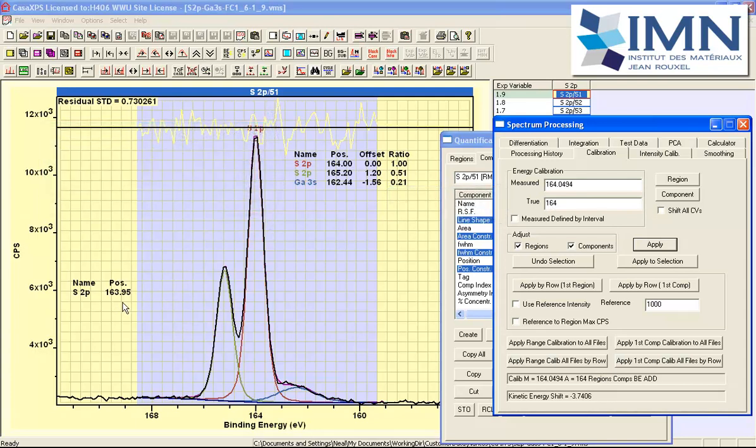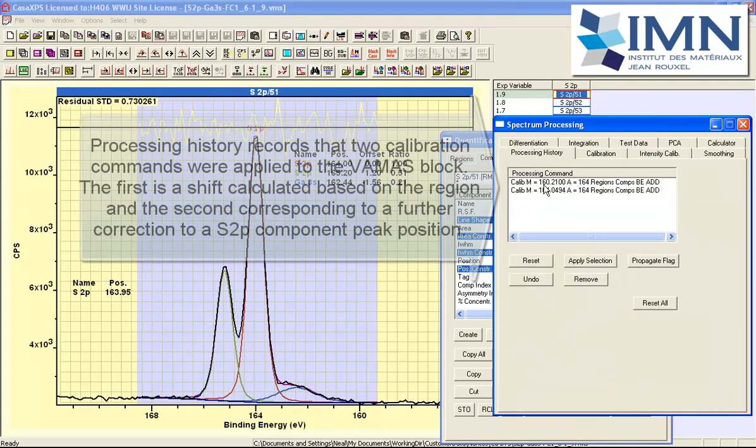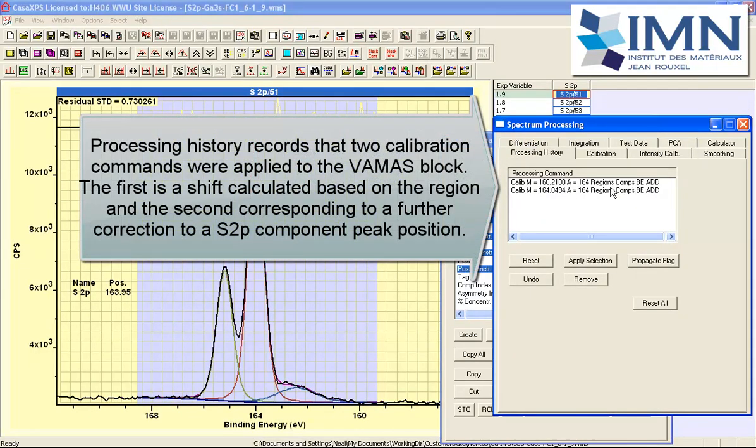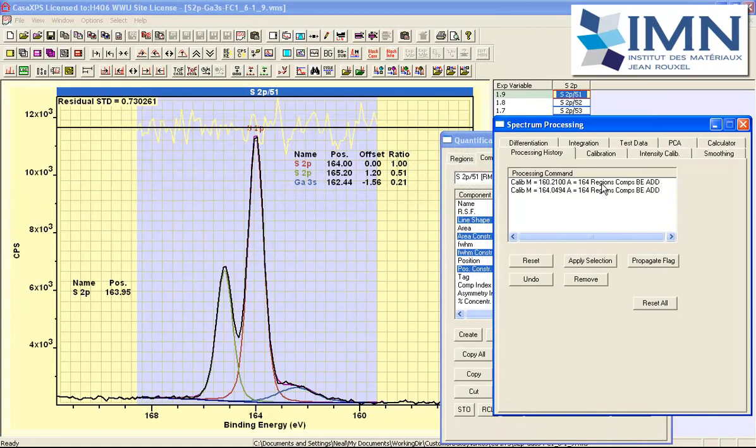So now you can see that the peak position for the three halves peak is now agreeing with the true value and as a consequence the region position has now moved by a corresponding offset between the region and the component. And if we look at the processing history you can see that there are two instructions now indicating that there was an initial calibration based on a region where we shifted regions and components and the second one was performed on the basis of the shift calculated based on these components.